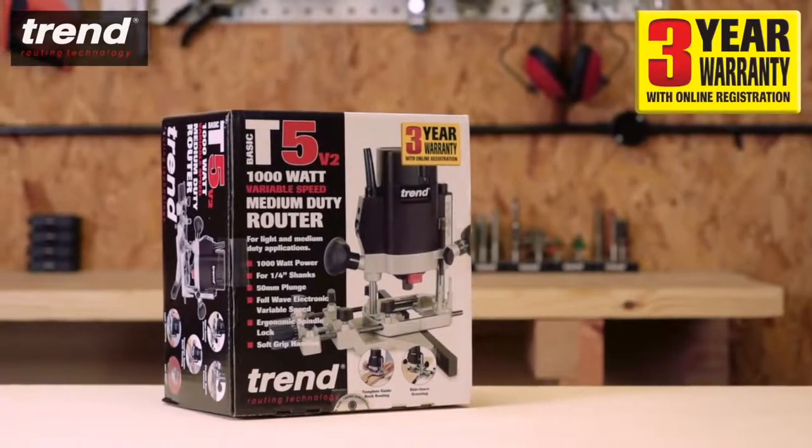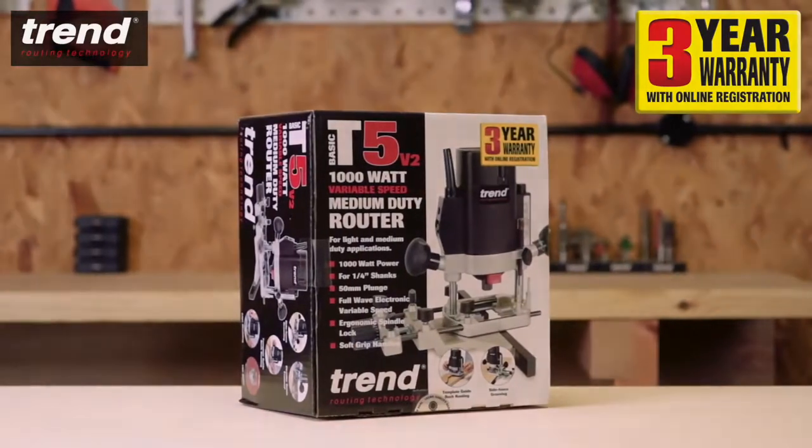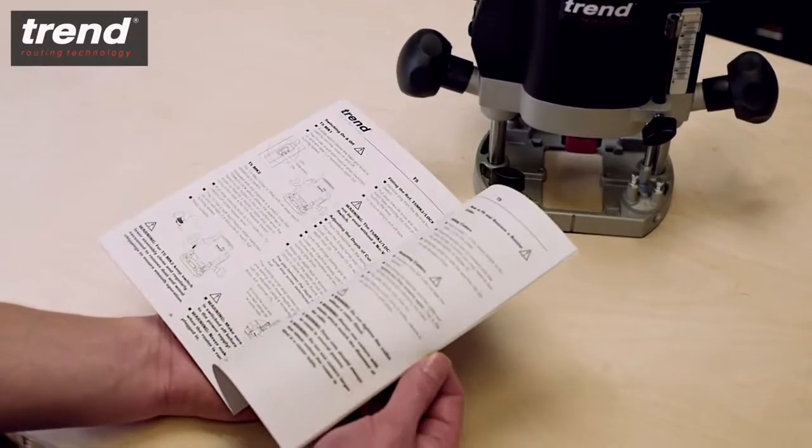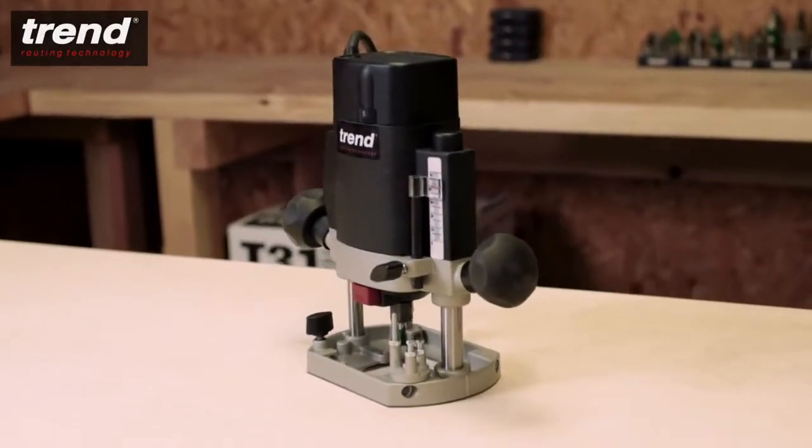The T5 is covered by a 3 year warranty. Simply register online to activate. The router comes with a detailed illustrated instruction manual covering everything you'll need to know to set up and start routing.